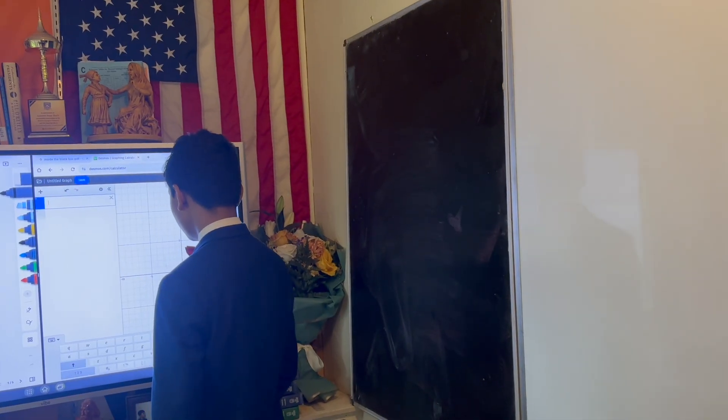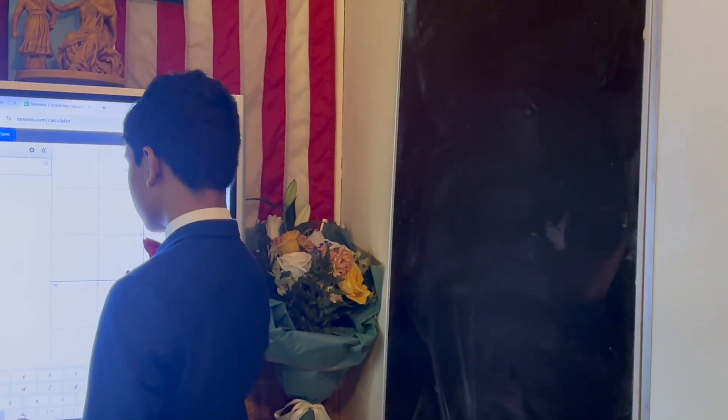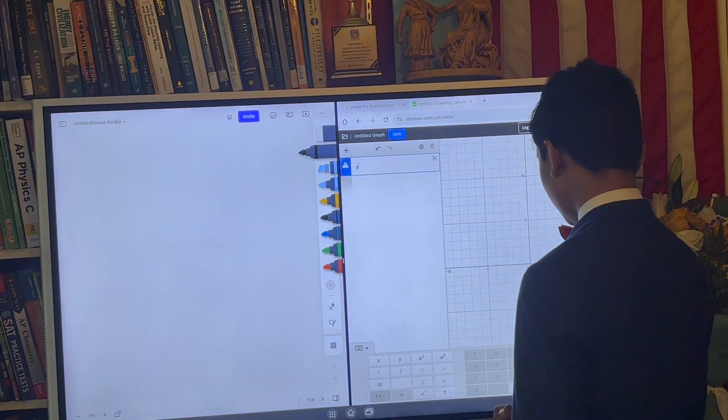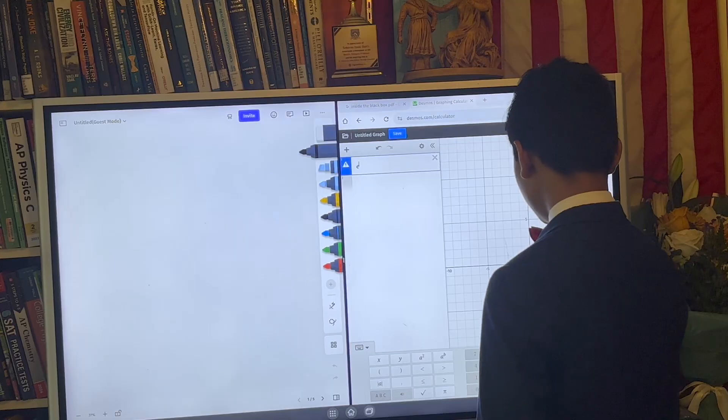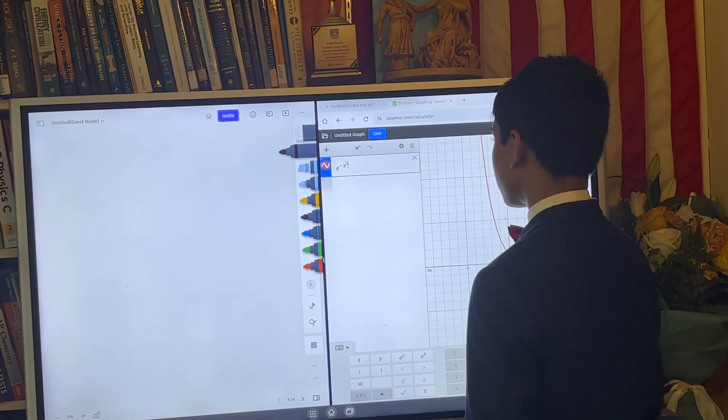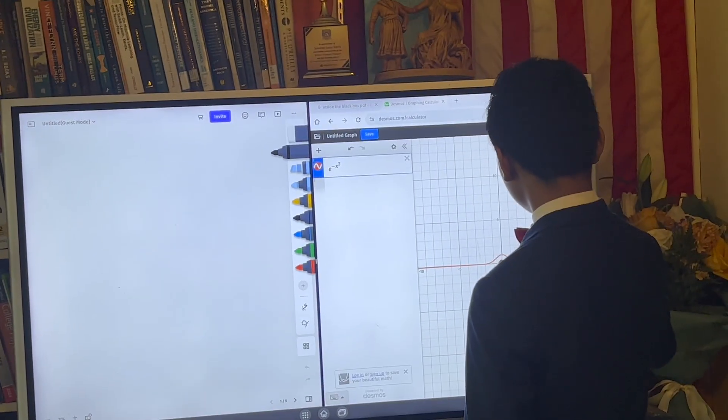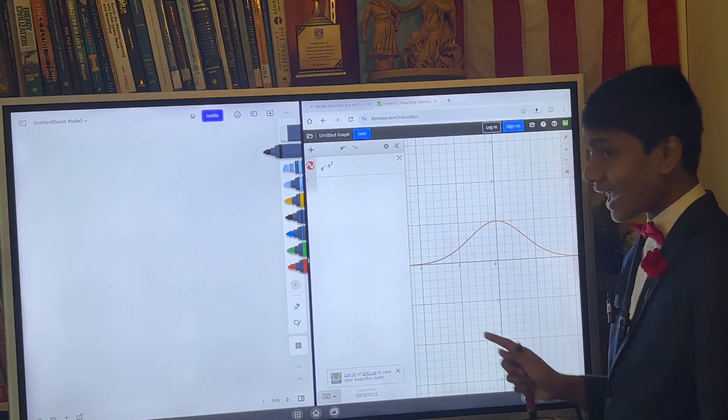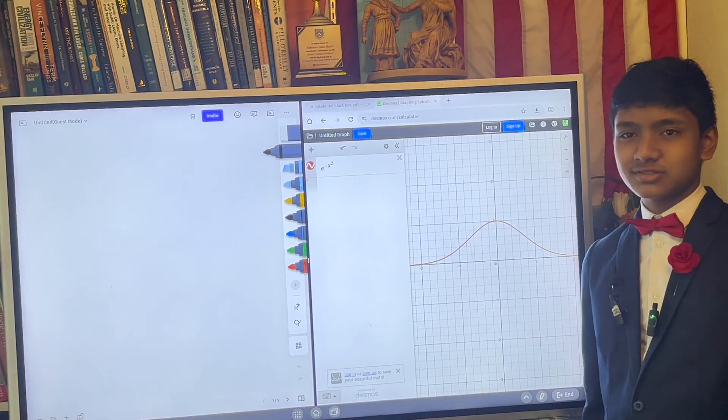Well, it's a bell-shaped curve. So using our very state-of-the-art smart board here, we're going to take e to the minus x squared. Here it is. There's our little buddy. That, right there, is the normal distribution.